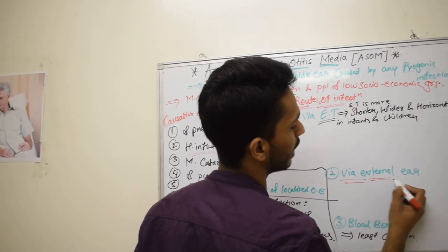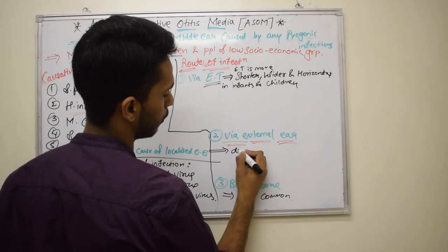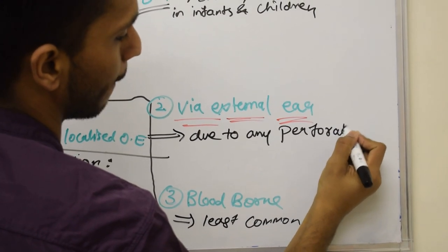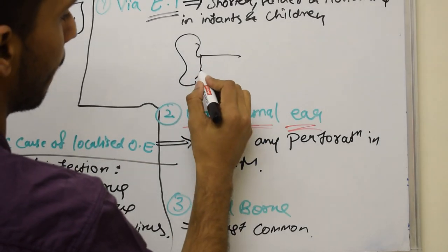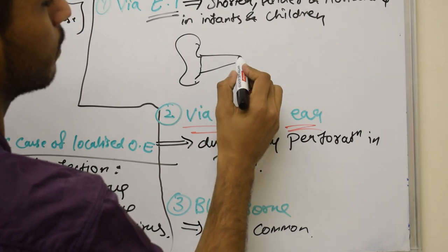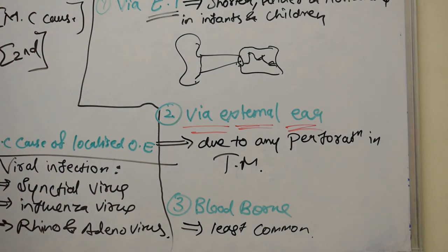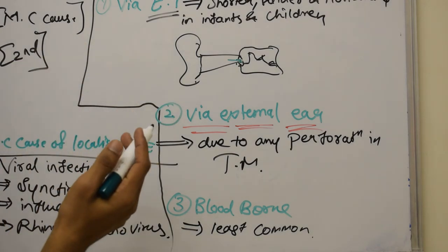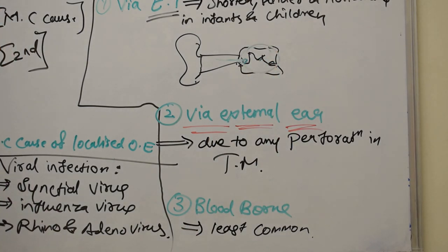The other route of infection via the external ear is due to any perforation in the tympanic membrane. If there is a small perforation in the tympanic membrane, it will help bacteria or viruses responsible for this infection to pass through that perforation, reach the middle ear, and may cause infection.